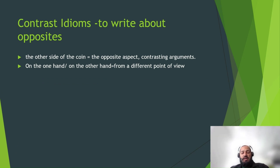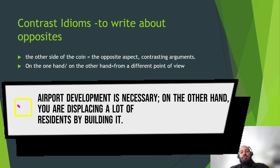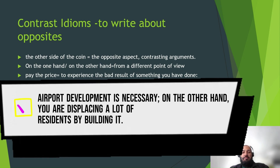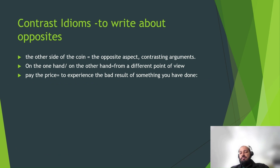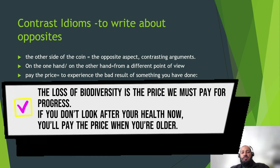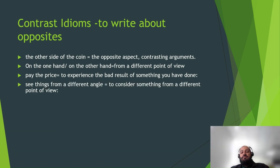Similarly, 'on the one hand / on the other hand' is a very popular idiom to show both sides of a situation. For example: 'Airport development is necessary; on the other hand, you are displacing a lot of residents by building it.' Then 'pay the price' — when something has a bad result, you pay the price for it. For example: 'The loss of biodiversity is the price we must pay for progress.' Or: 'If you don't look after your health now, you will pay the price when you are older.'